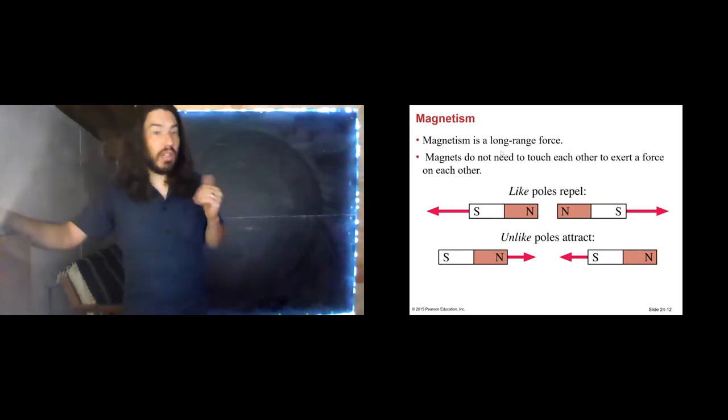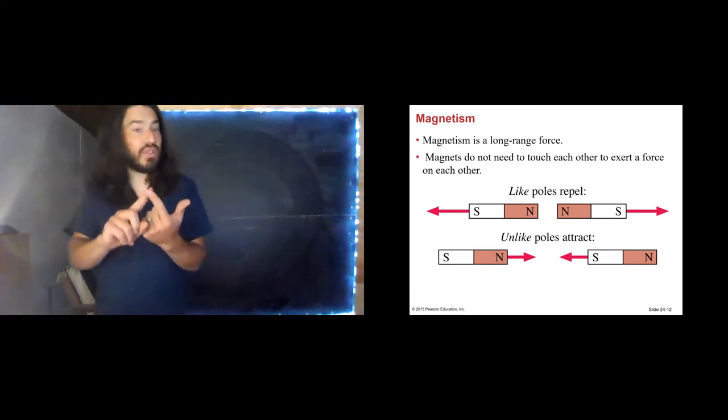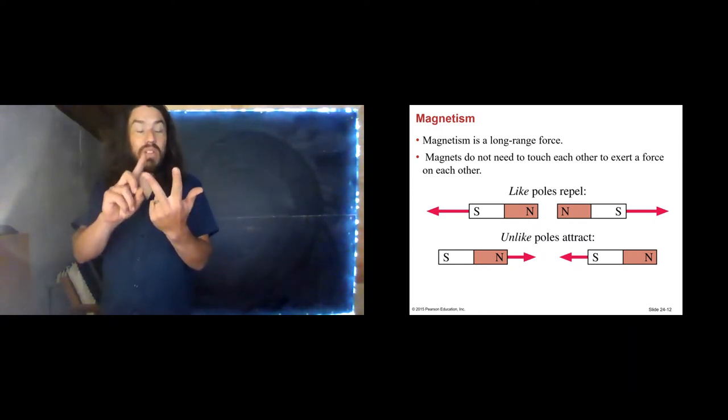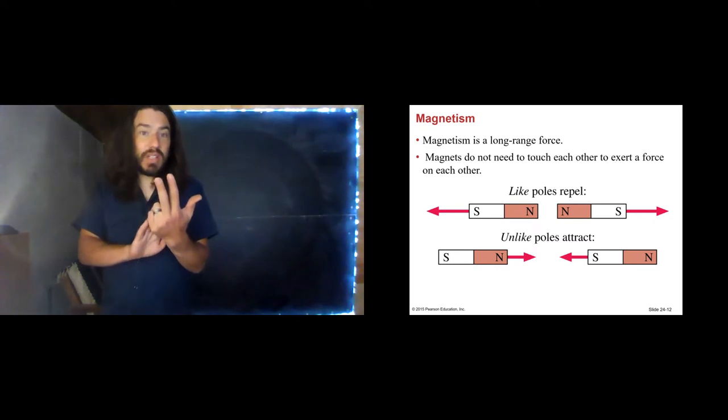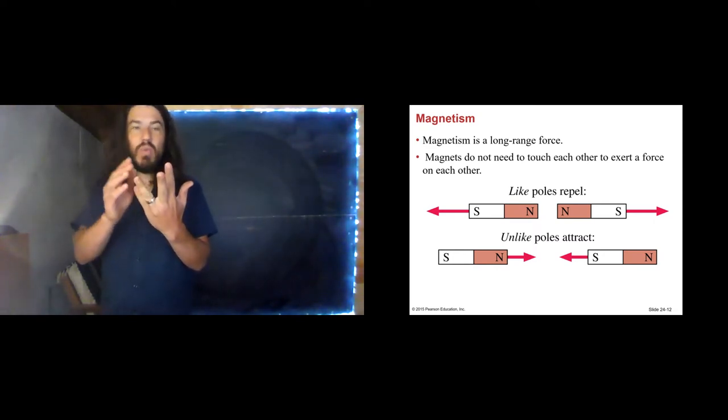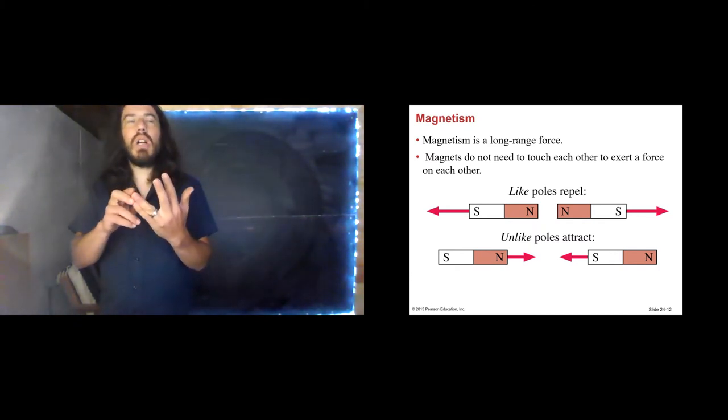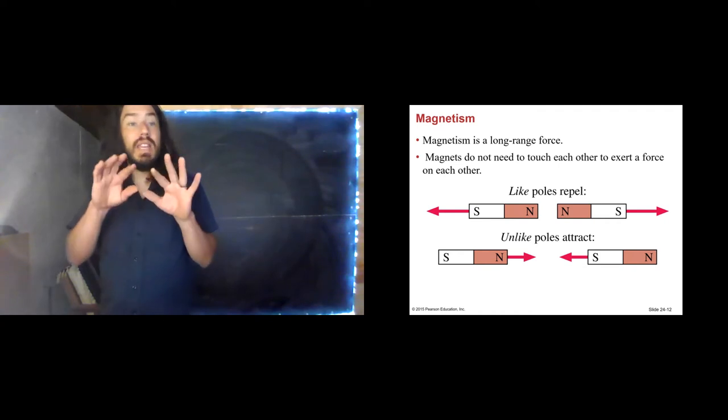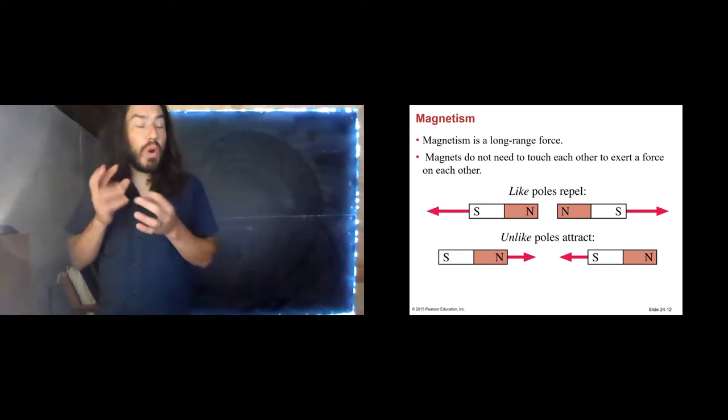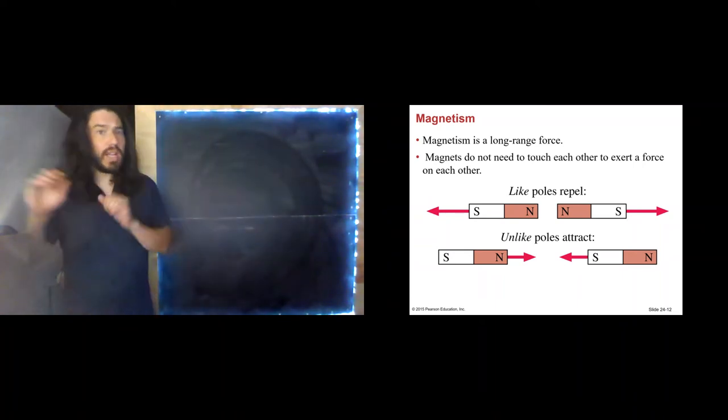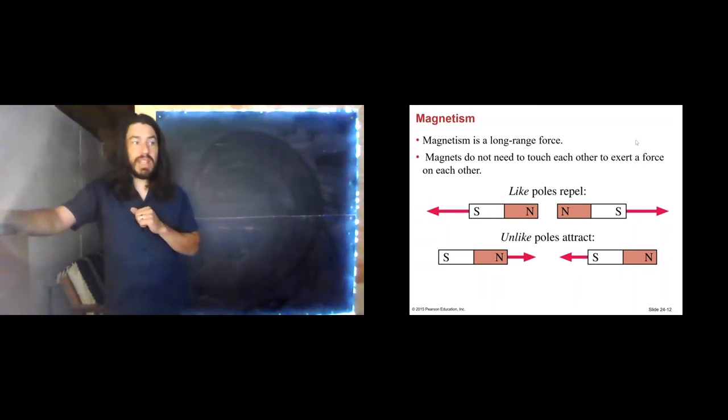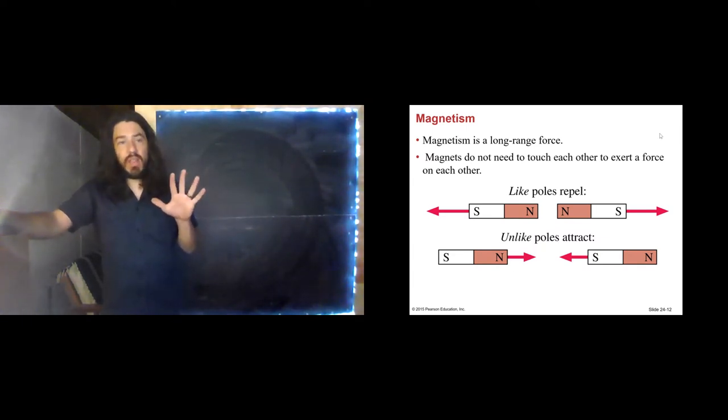So, magnetism is a long-range force. I already mentioned that. The magnets don't need to touch each other in order to experience that force. Now we've learned about gravity, electricity is a long-range force, and we've also got magnetism now to add to the list. There are two others in the universe that we know of, and those are the weak force, the nuclear weak force, and the nuclear strong force. Those are responsible for holding the nucleus together, and for holding protons and neutrons together. We're not going to get into those too much in this class. But that is all of the long-range forces that physicists are absolutely sure exist in the world.